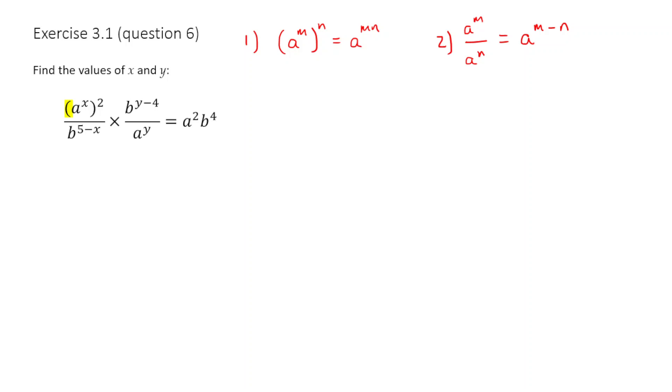Well, firstly, I'm going to apply this rule, the rule number 1, to a to the x to the power of 2, because what I should get there is multiplying the powers to get a to the power of 2x. And everything else at the moment, we're just going to keep as the same, b to the power of 5 minus x there on the denominator, and b to the power of y minus 4, and a to the y. Everything else remains the same.